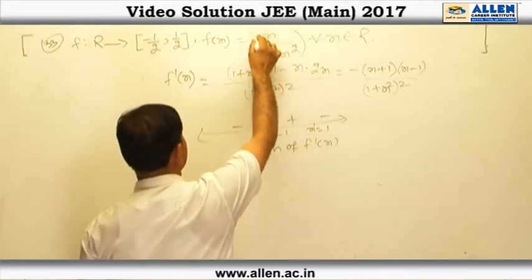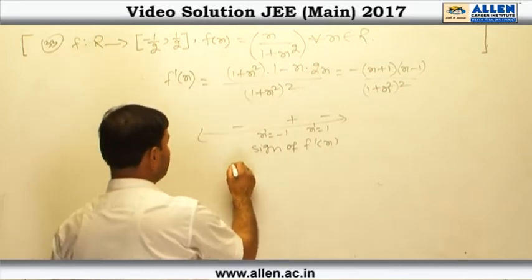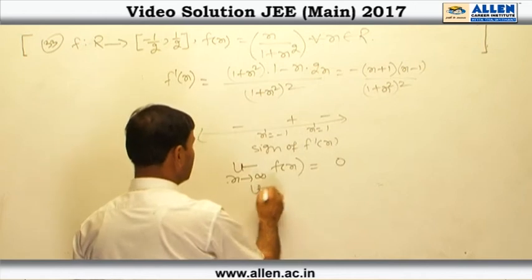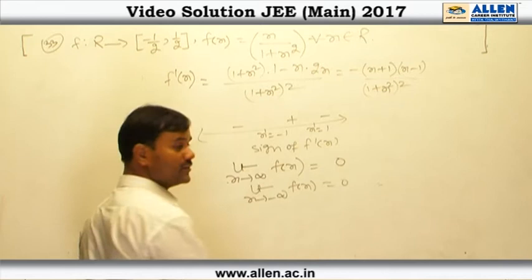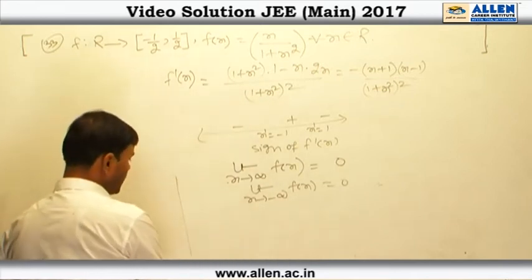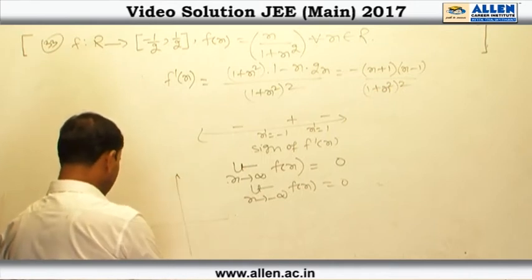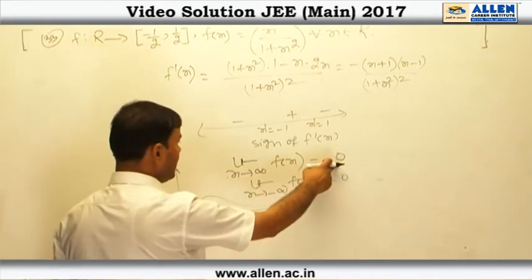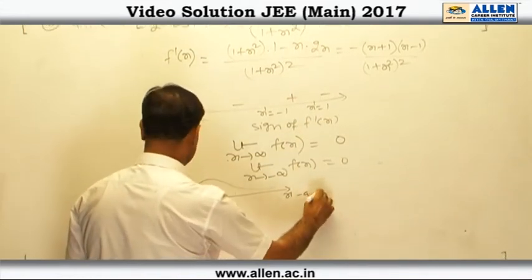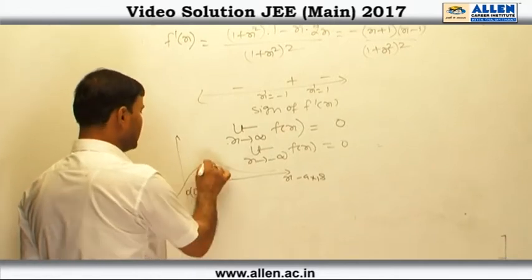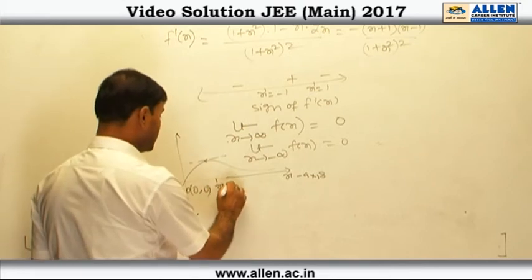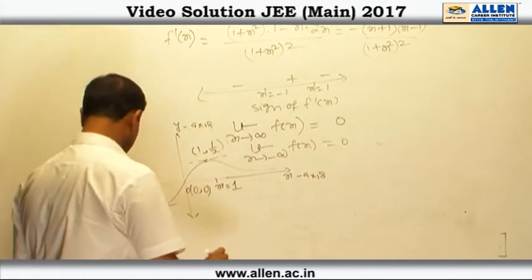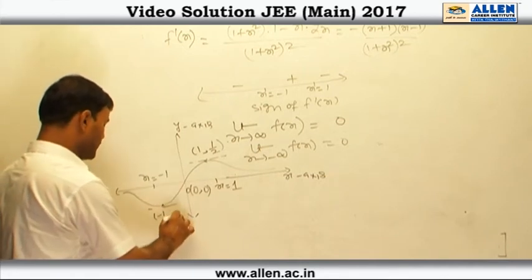We can also observe that this function is an odd function. Furthermore, the limit of f(x) as x approaches infinity equals 0, and the limit as x approaches minus infinity also equals 0. So when we draw the graph, the function approaches 0 at both ends, passes through the origin, reaches a maximum value of half at x = 1, and a minimum value of minus half at x = -1.